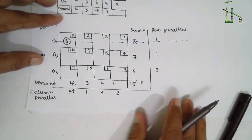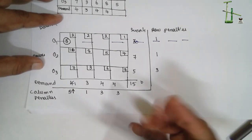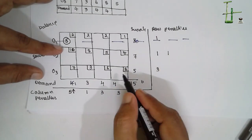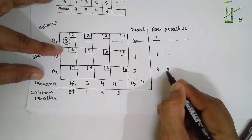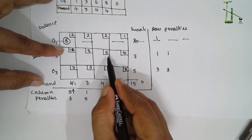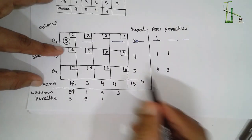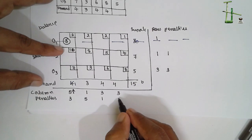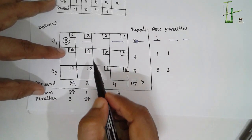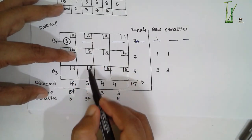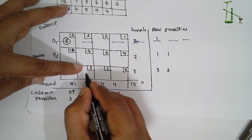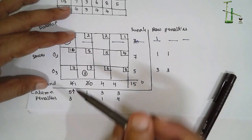Next iteration: follow the same procedure. Row penalty again 5 minus 4 = 1; next is 3 and 6, difference = 3; 10 minus 7 = 3; 8 minus 3 = 5; 6 minus 5 = 1. Column penalty: 8 minus 4 = 4. Among row and column penalties, the larger value is 5. In that column select the smallest value, which is 3. Supply is 5, demand is 3, so write 3. Demand becomes 0 — remove this entire column.